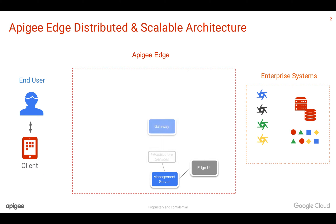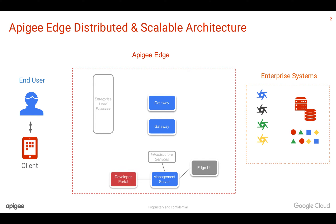Once your API is ready, you deploy it to Apigee Edge gateways by choosing the environment you want to deploy to. In general, there will be more than one API gateway in the Apigee Edge platform where your API proxy will be deployed. These gateways are front-ended by an Enterprise Load Balancer, which load balances traffic to multiple gateways. Apigee Edge also provides a developer portal where you can onboard app developers, partners, or internal developers who would like to consume the APIs. Once onboarded, developers get keys and access the APIs through the Enterprise Load Balancer, which distributes traffic to different gateways, ultimately reaching the backend and returning a response to the client.